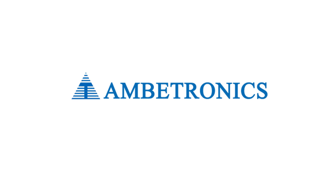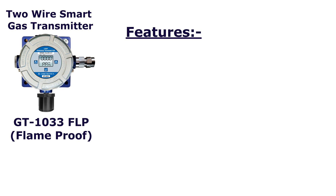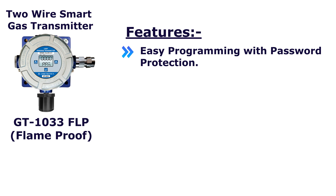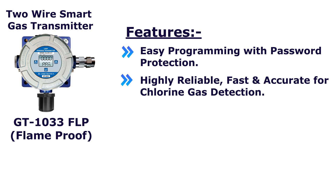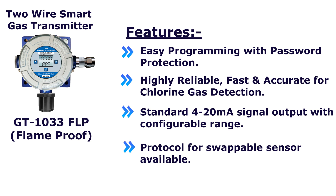Ambitronics provides gas detection systems for the specific purpose of detecting chlorine. The Ambitronics gas detection systems can be used on a standalone basis or integrated into plant management control systems. Features include easy programming with password protection, highly reliable, fast and accurate chlorine gas detection, standard 4 to 20 milliampere signal output with configurable range, and a protocol for swappable sensors.